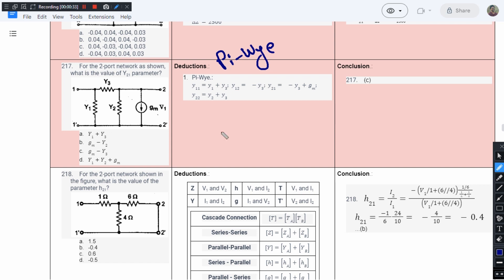We are trying to find the Y parameter matrix. For a pi network, we usually go for Y matrix. So this is the Y matrix.